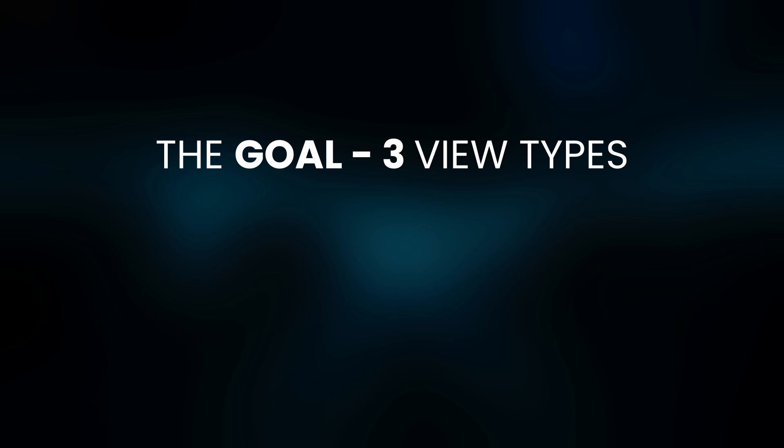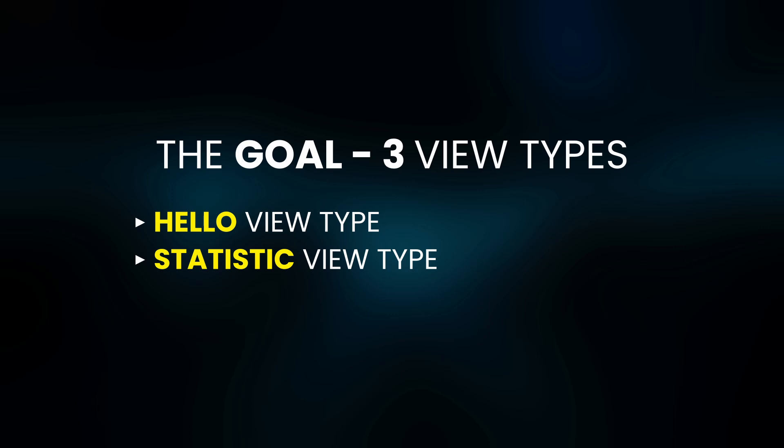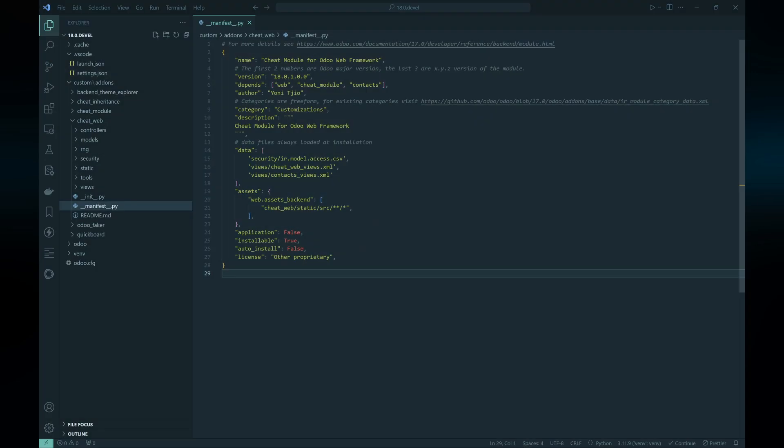Before jumping into the code, let's outline what we'll be building. We will create three distinct custom view types: a simple view that displays a hello message; a basic view that shows model details such as model name, record count, and field information; and a view that incorporates several built-in Odoo web framework features — the Layout component, Search Bar component, and the use pager hook for pagination. We will also add common buttons for creating and editing records in this third custom view type. We'll be using the 'cheat_web' module created in a previous video.